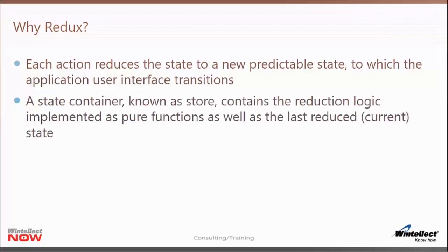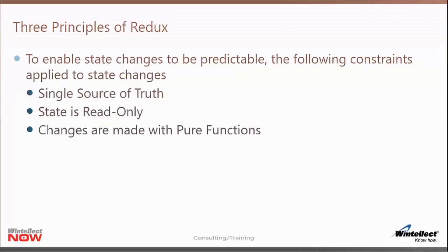You will never have the same action with the same state yield a different state result — it will always yield the same one. Of course, if you apply an action to the state repeatedly, that could come up with different states; but if you have the same state and the same action, you always get the same predictable state. This new state is what's used to transition the user interface. A state container, also known as a store, contains two things: the reduction logic implemented with pure functions, and the last reduced — or current — state available through the Redux store.